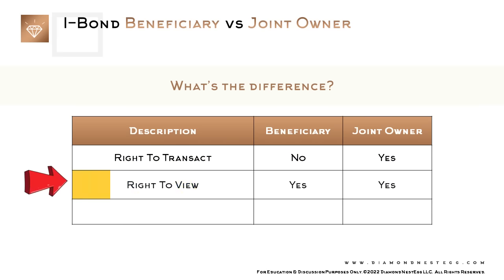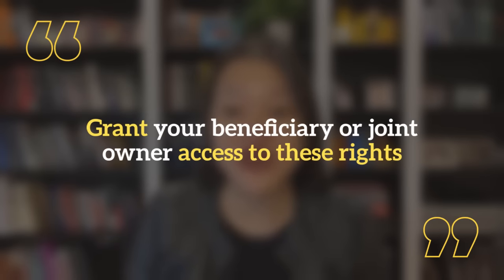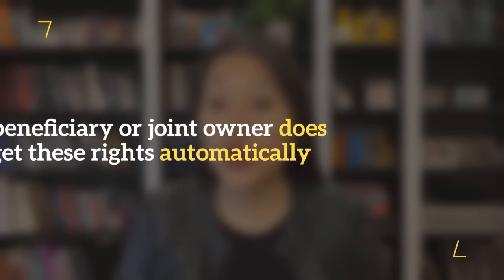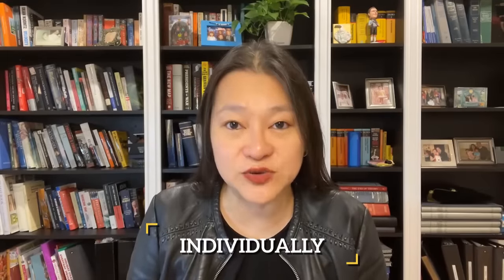Everything else is the same — a beneficiary has the right to view, so does a joint owner; a beneficiary gets your iBond upon your death, so does a joint owner. The thing about these rights to view and/or transact, though, is that even though a beneficiary or joint owner has the right, you still have to grant it to them first in Treasury Direct terms. Your beneficiary or joint owner does not get these rights automatically — there are certain steps you need to take first, and then more steps that your beneficiary or joint owner have to take afterwards. Plus you have to grant access bond by bond individually.